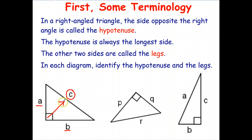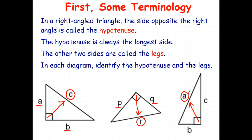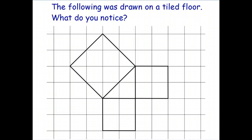The other two sides — the two short sides — are called the legs. The legs are the two short sides that make up the right angle, and the hypotenuse is the longest side, which is also opposite the right angle. Why don't you stop the video and identify the hypotenuse and the legs on the other two triangles? The longest side on the second triangle is R, so R is the hypotenuse and P and Q are the legs. On the third triangle, the side opposite the right angle is side A, and therefore B and C are the two legs.